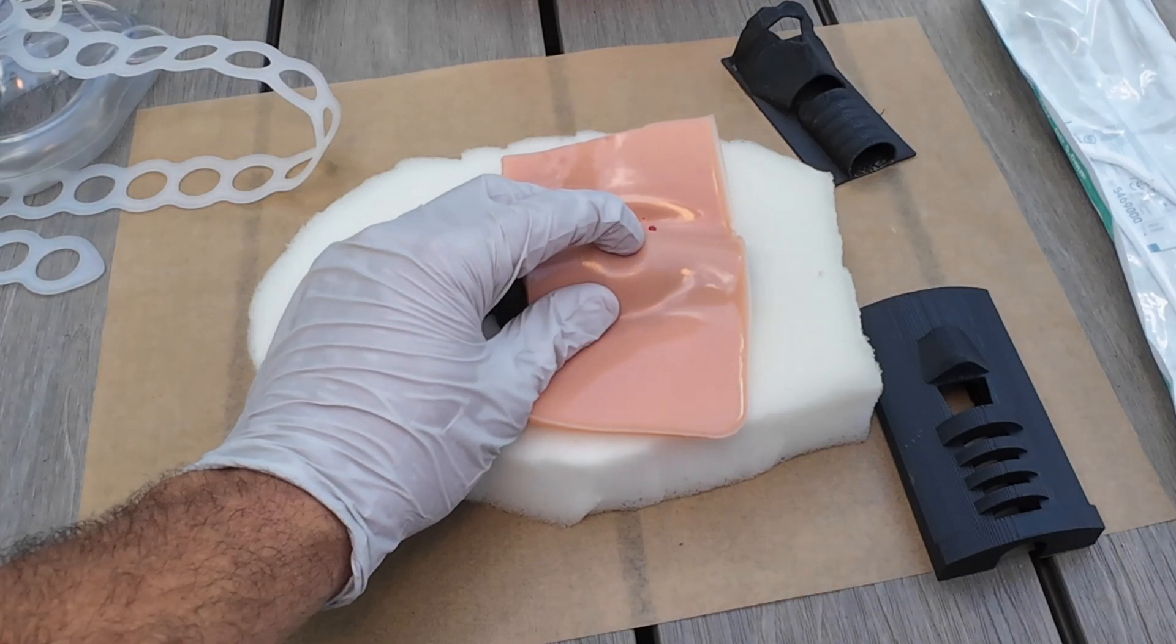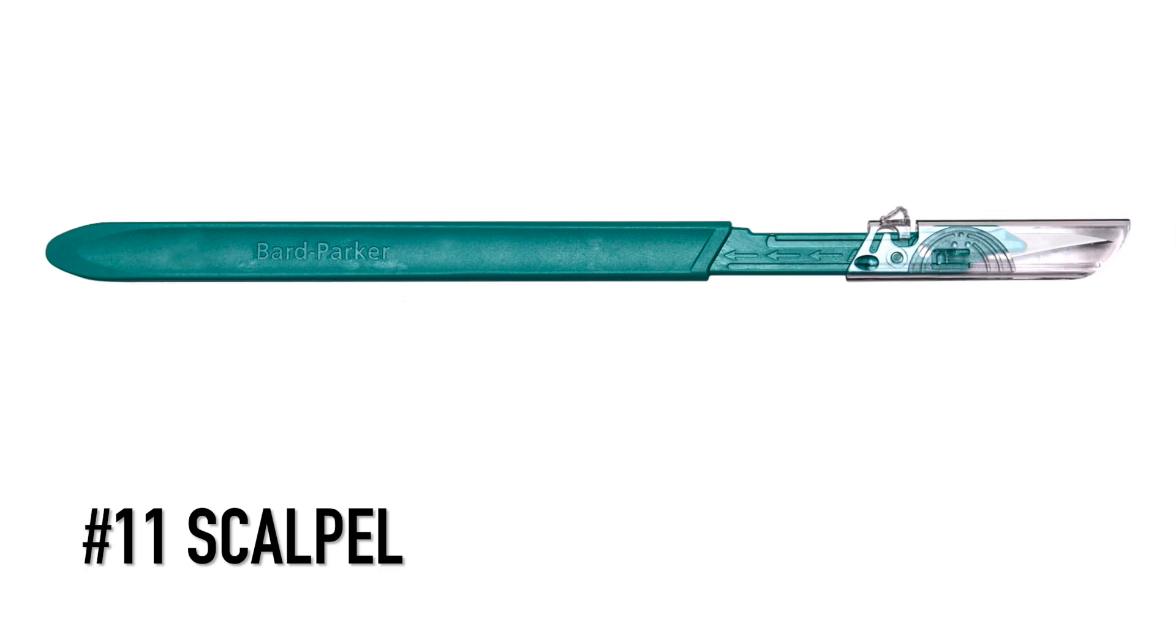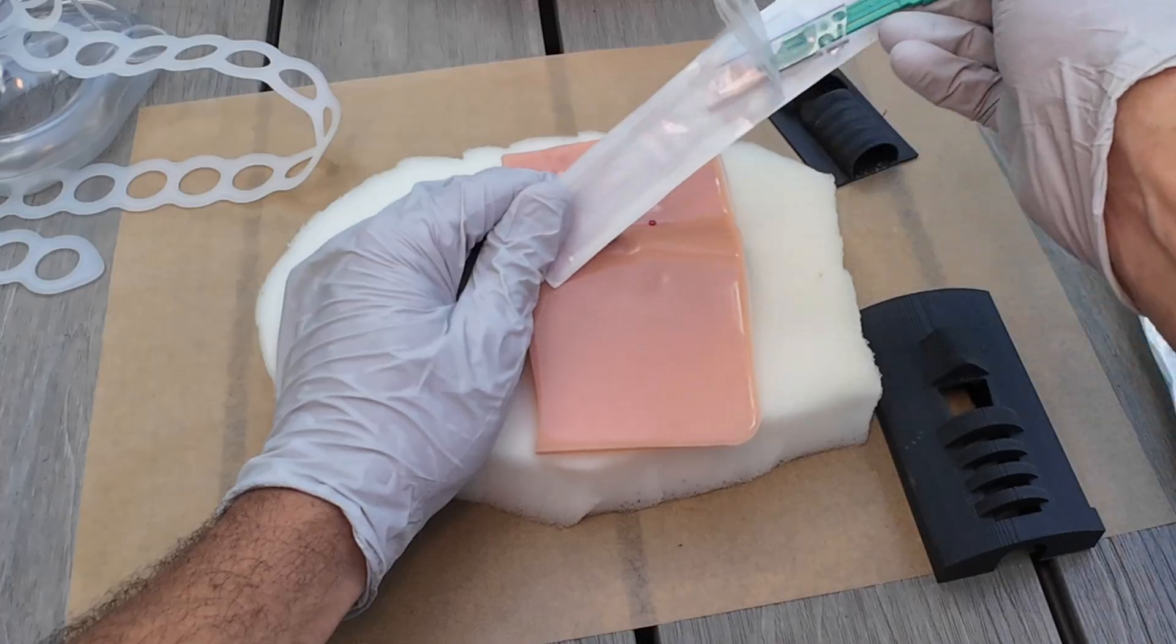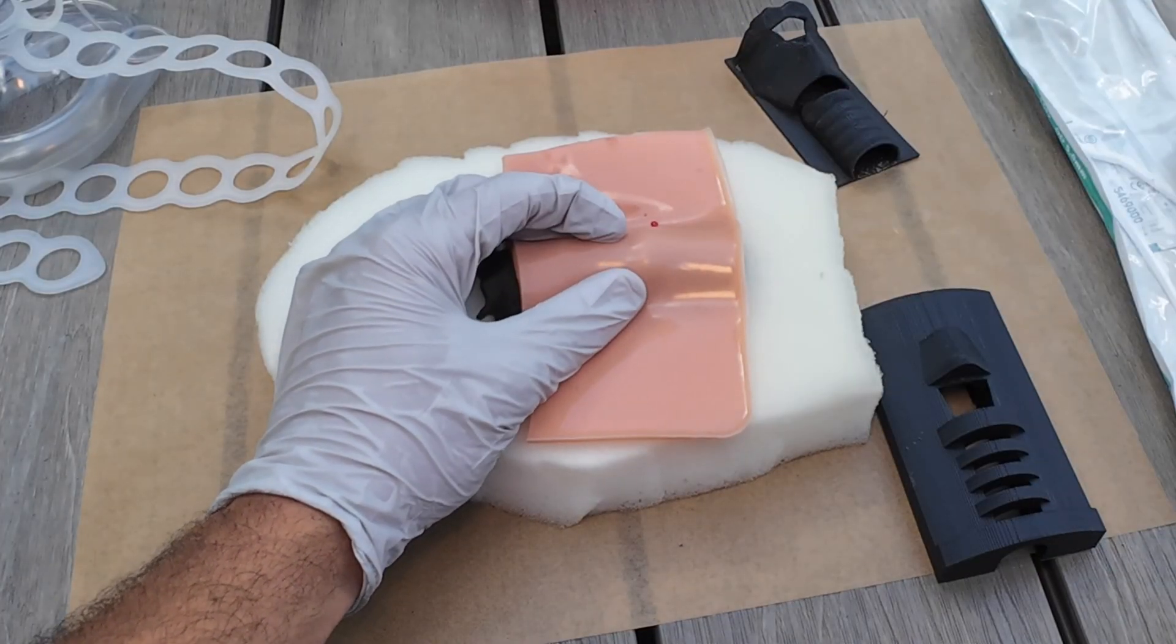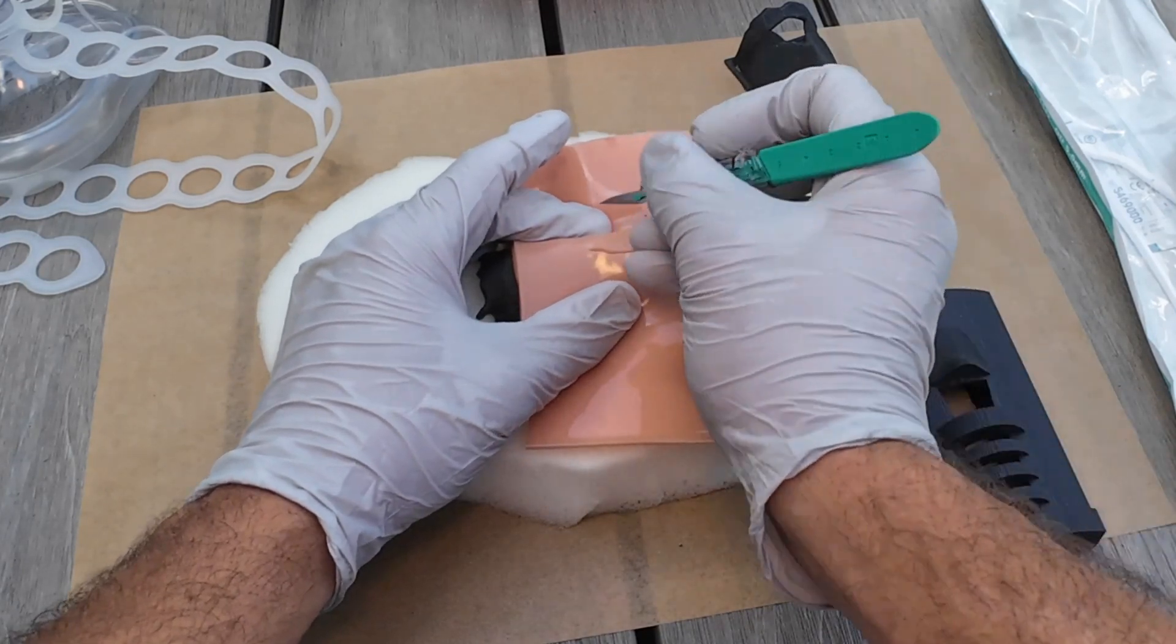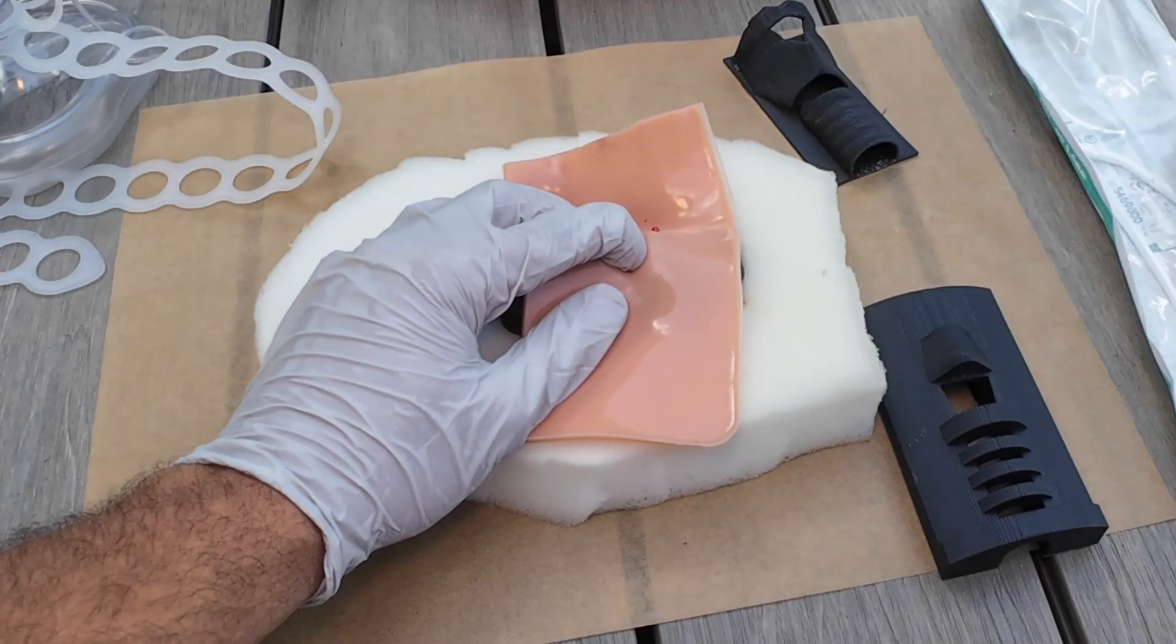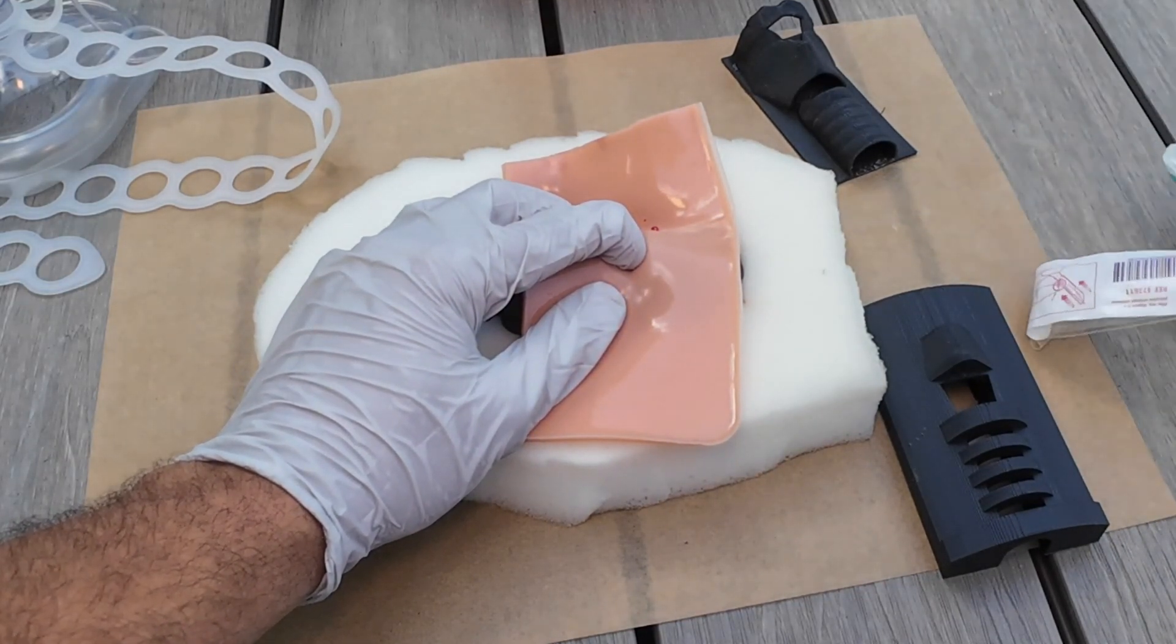Landmark it with my non-dominant finger. Pull my scalpel out. Scalpel's exposed. Cut down. And cut across. Now I hold that hole with my finger. Close my scalpel. Pull my bougie out.